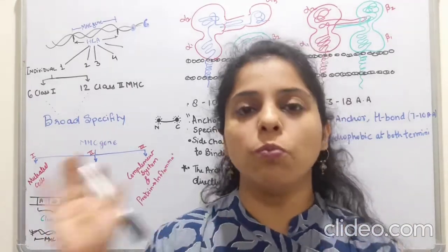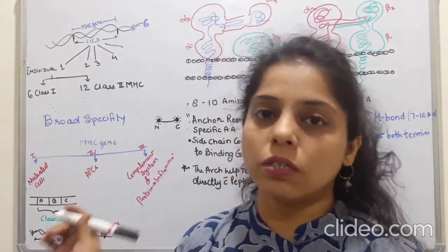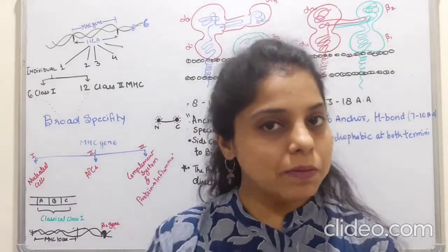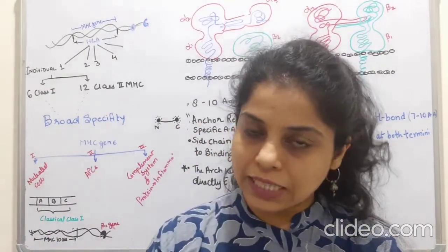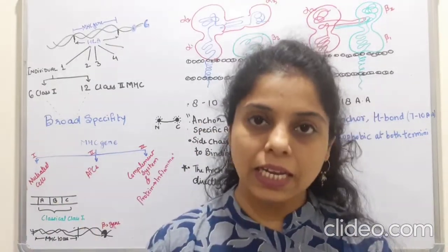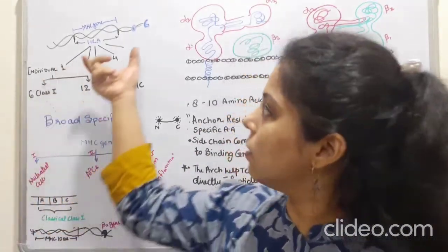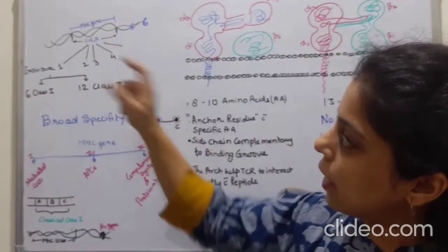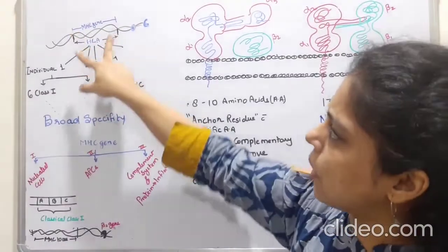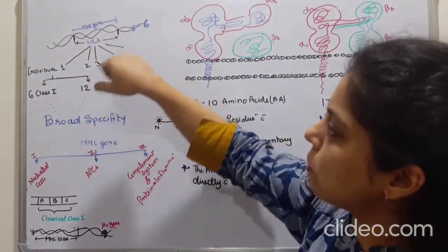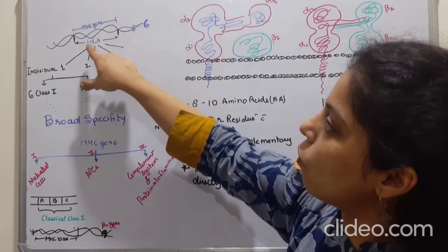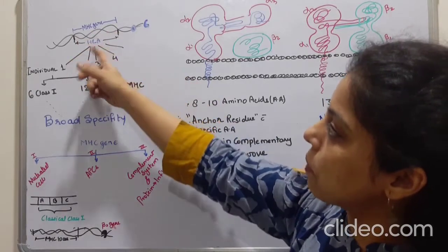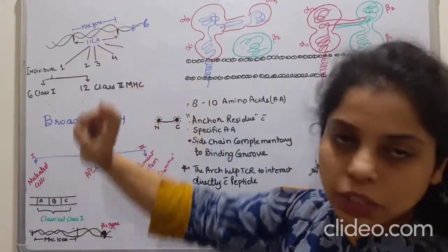Moving back to today's topic — chromosome number 6, the HLA region. You can see here I have made a structure. There is a particular region in chromosome number 6 called HLA, and it presents the MHC gene.